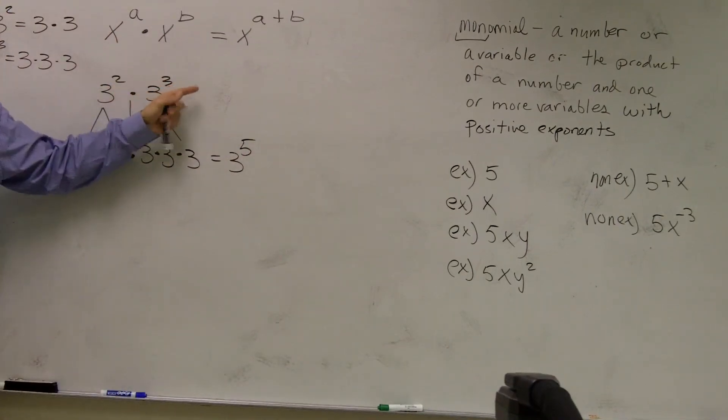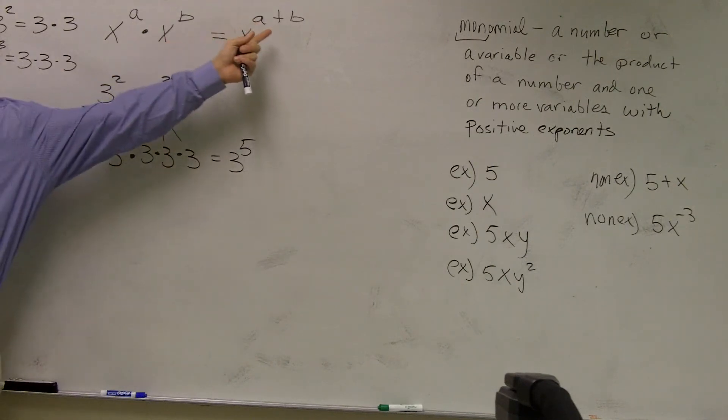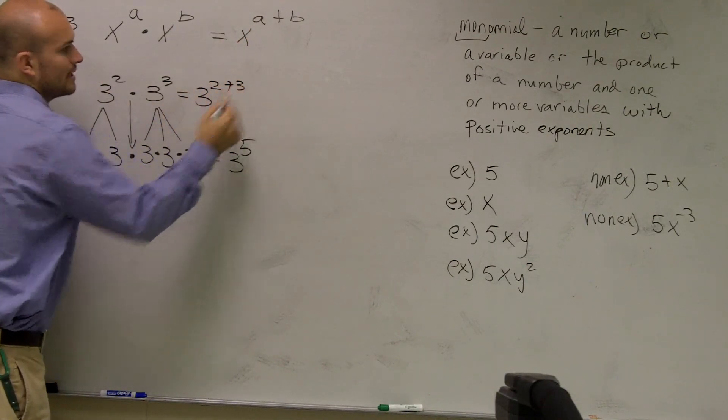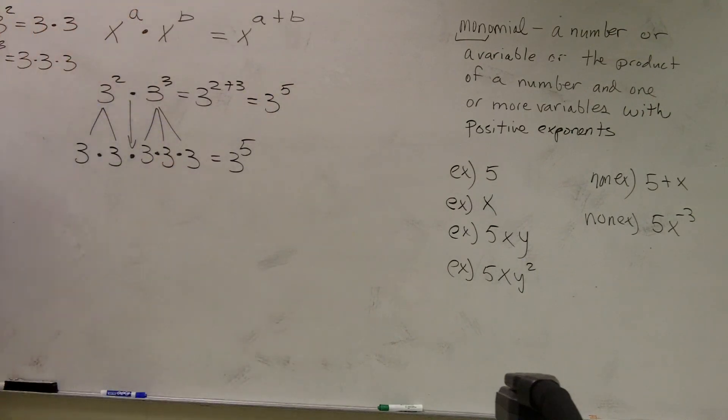What does my rule of exponents tell me to do when I have the same base and I'm multiplying numbers with exponents? Add the exponents. What is 2 plus 3? Does everybody see why that works or why it can work for us?